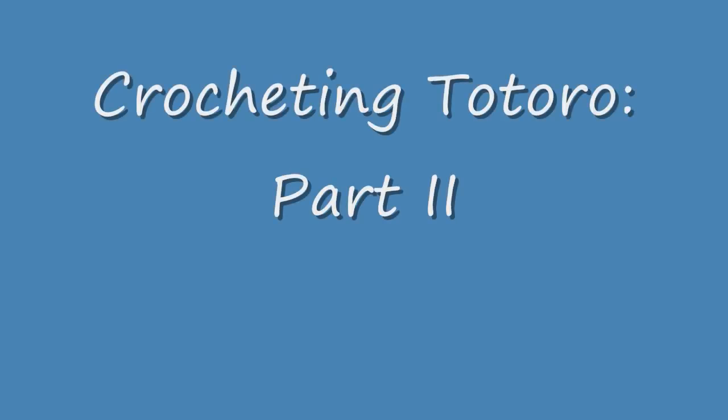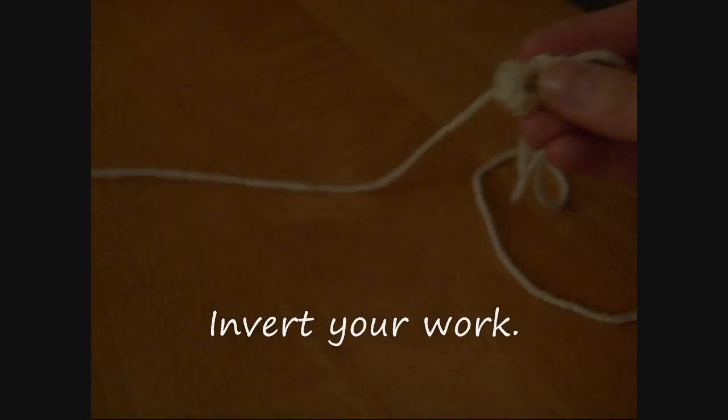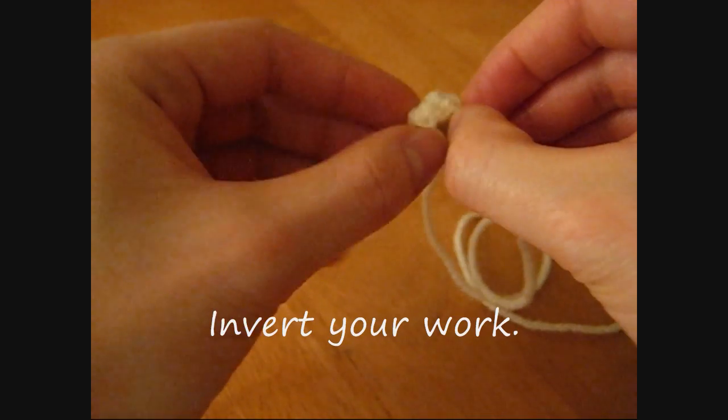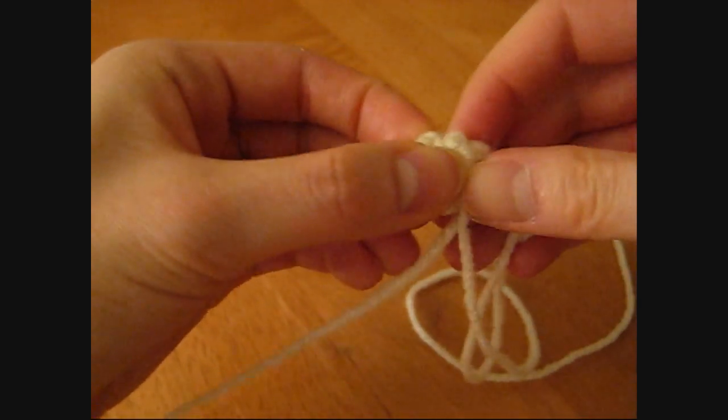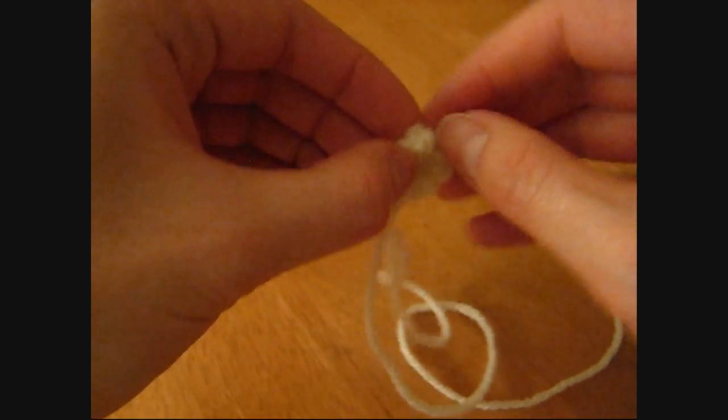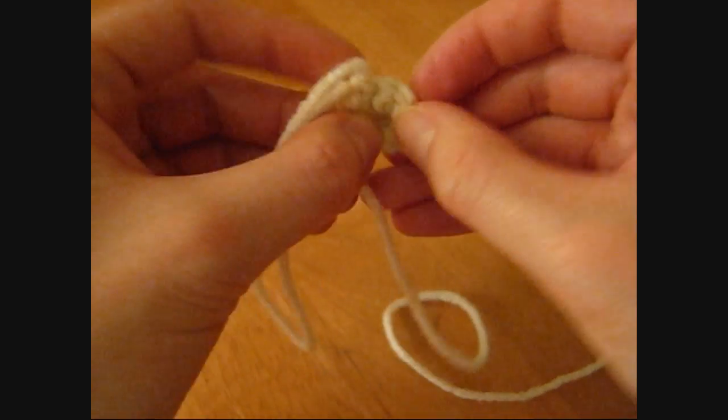This is part 2 of the Totoro tutorial. Next, invert your work so that you won't have a difficult time doing it later. Trust me, it's going to save time. If you need to, you can use your crochet hook to help you turn it inside out.